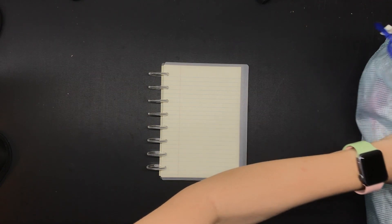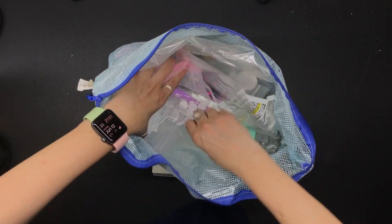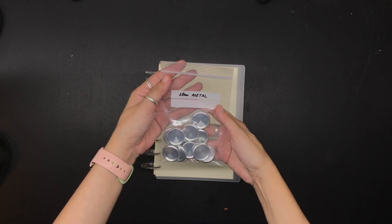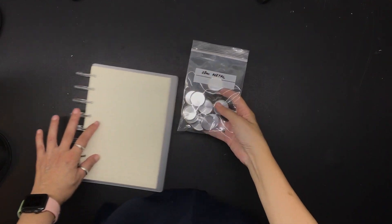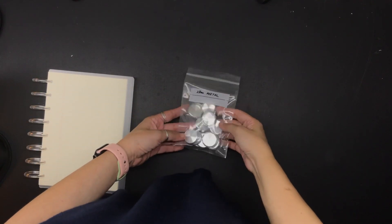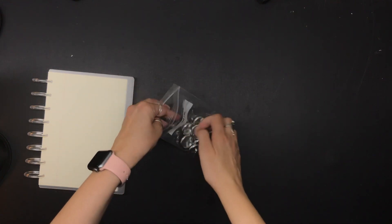So in changing up the look of this notebook, I am also going to switch discs. I'm going to use these silver metal discs. These are not branded. I just bought them off Shopee for a very low price, and of course I will link them in the description box. These silver metal discs are 28 millimeters in diameter.